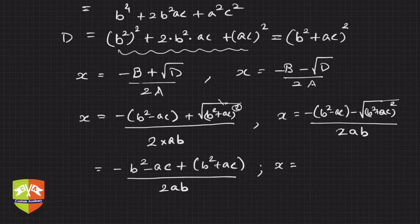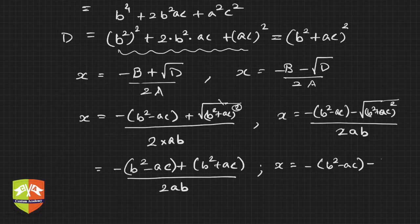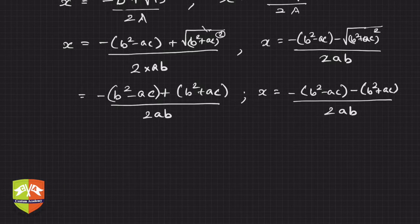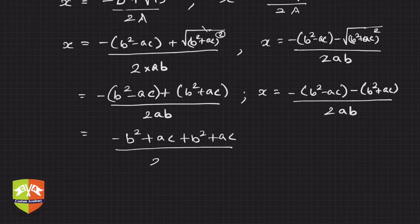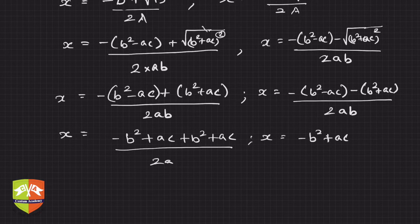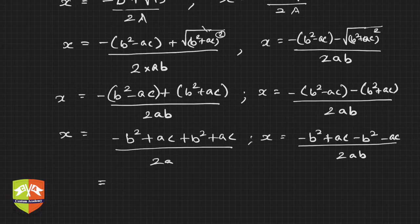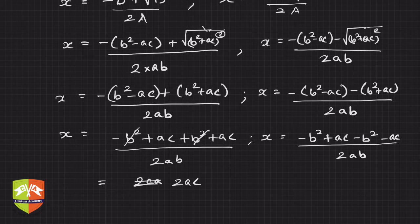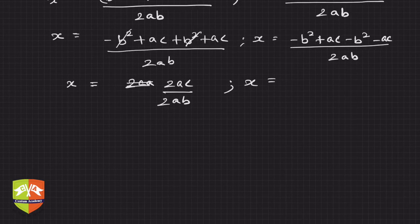Similarly, the second solution has minus (b² minus ac) minus (b² plus ac) upon 2ab. Opening the brackets for the first solution: minus b² plus ac plus b² plus ac upon 2ab. The minus b² and plus b² cancel, giving 2ac upon 2ab. For the second solution: minus b² plus ac minus b² minus ac upon 2ab, so the ac terms cancel, giving minus 2b² upon 2ab.